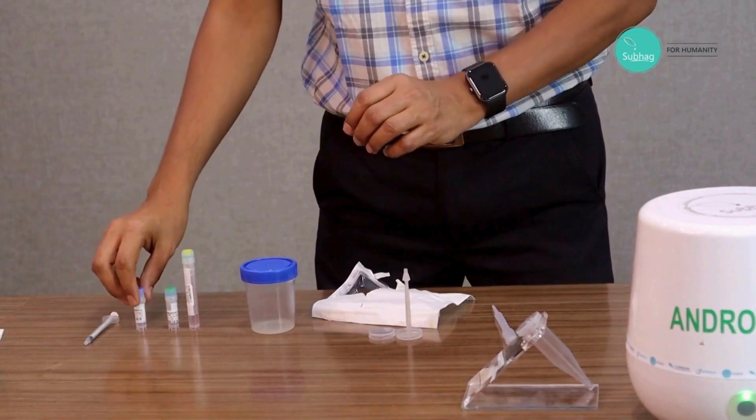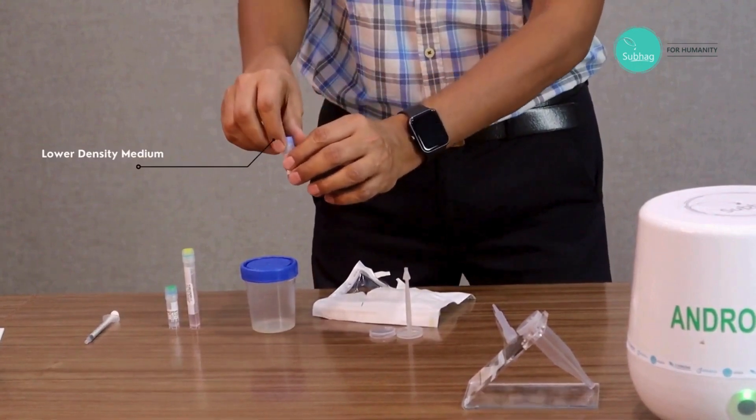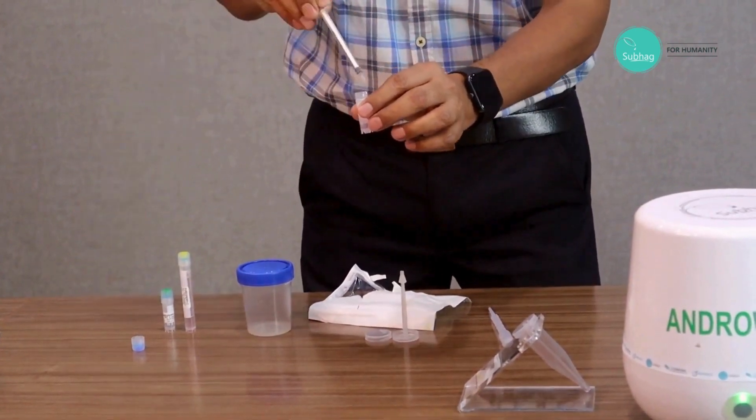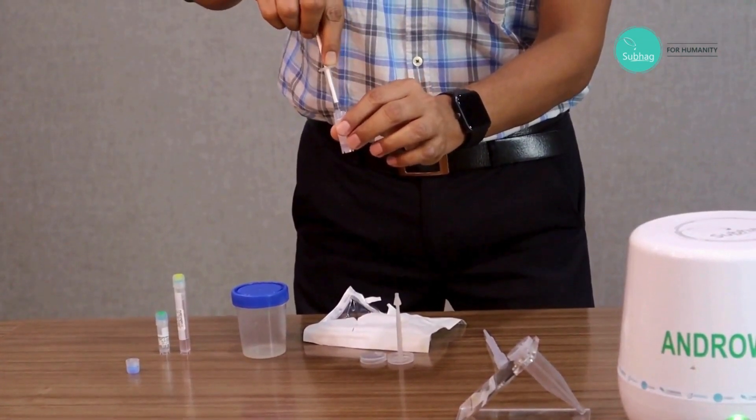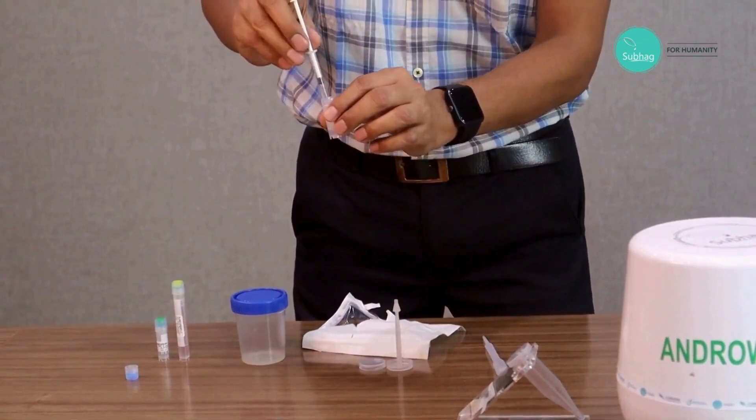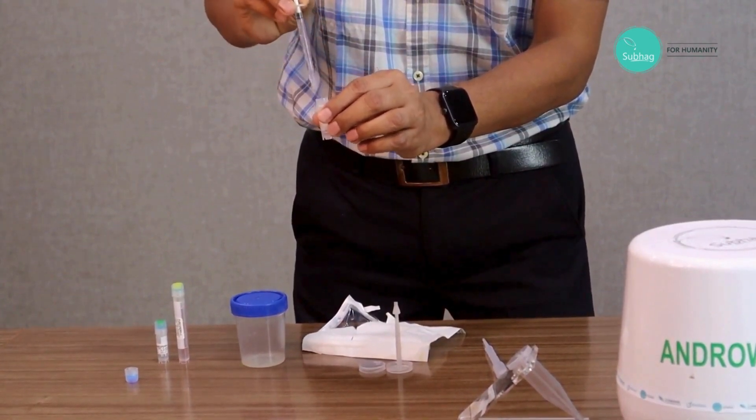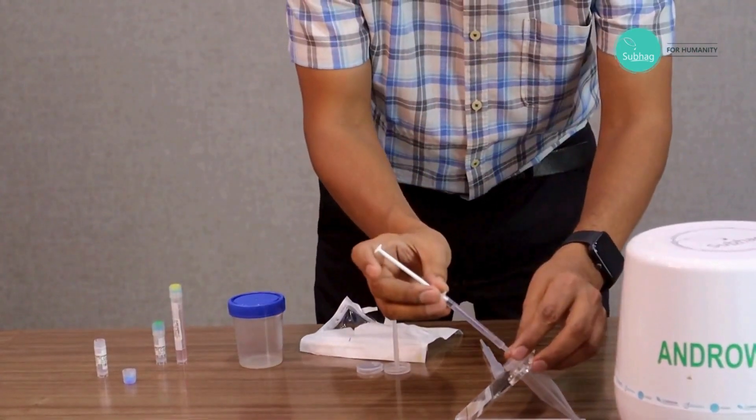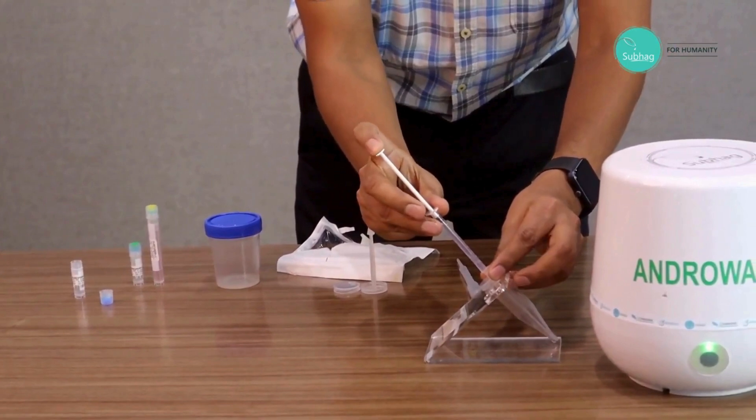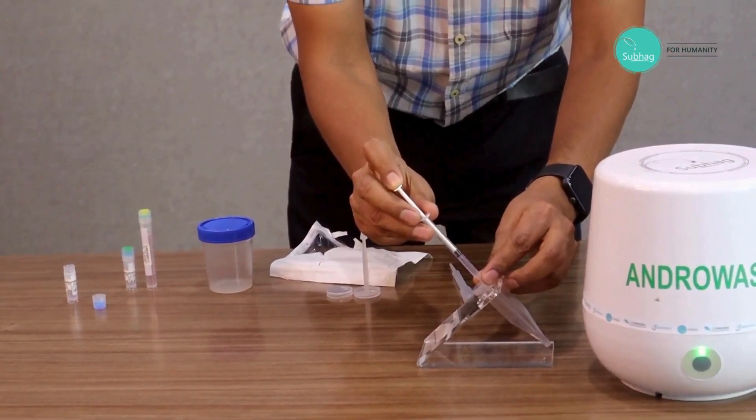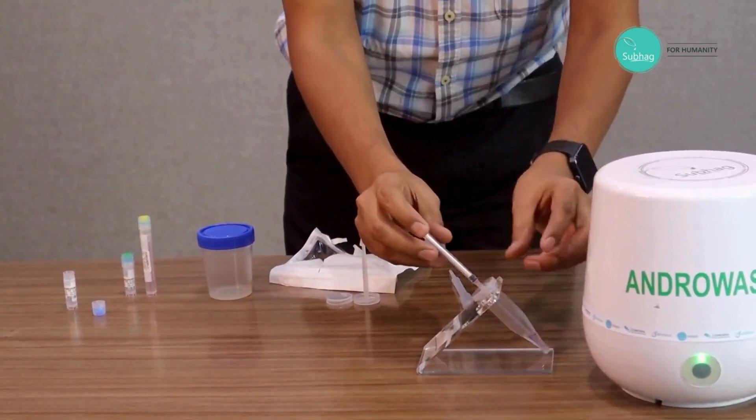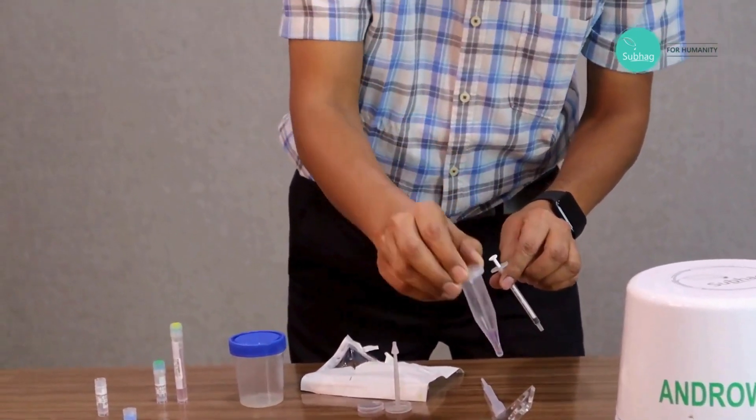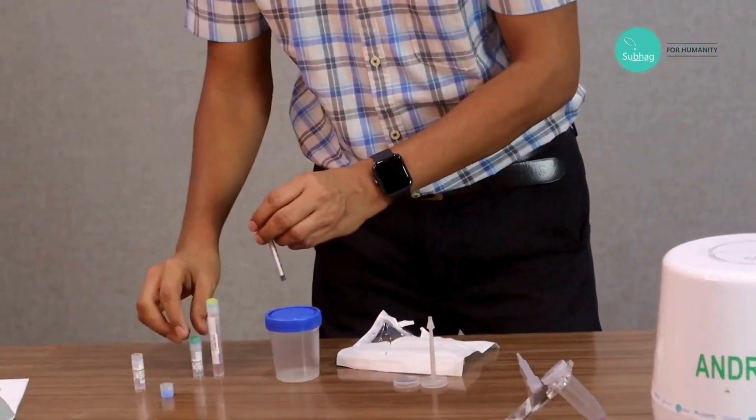Then we take the density gradient, low density gradient first. We take the entire volume at a time with the help of this syringe, take it fully, and then attach it to cap one and then inject it fully. So the low density layer is done.